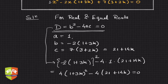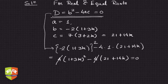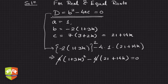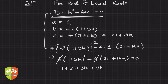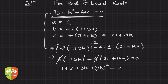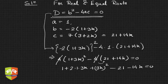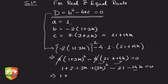Clearly 4 is common to both terms, so we divide the entire equation by 4. Opening the brackets using the identity (a plus b) whole squared equals a squared plus 2ab plus b squared, we get 1 plus 6k plus 9k squared minus 21 minus 14k equals zero.